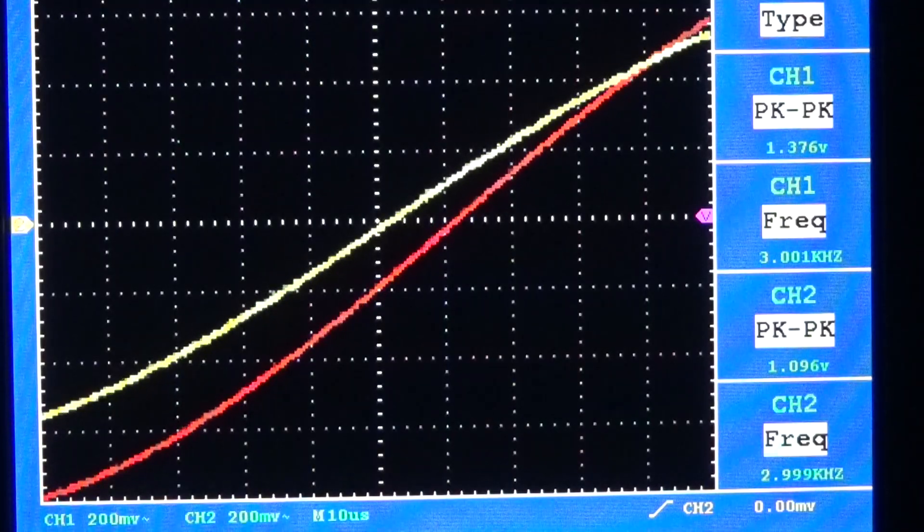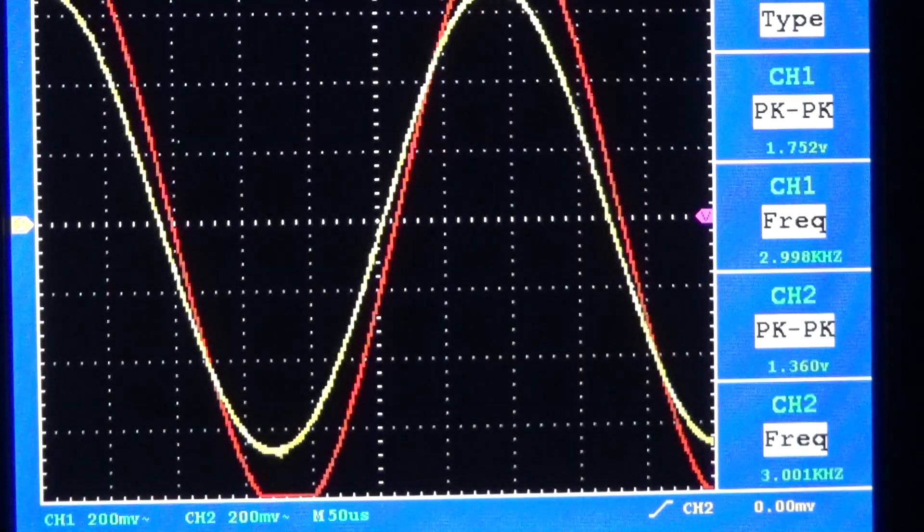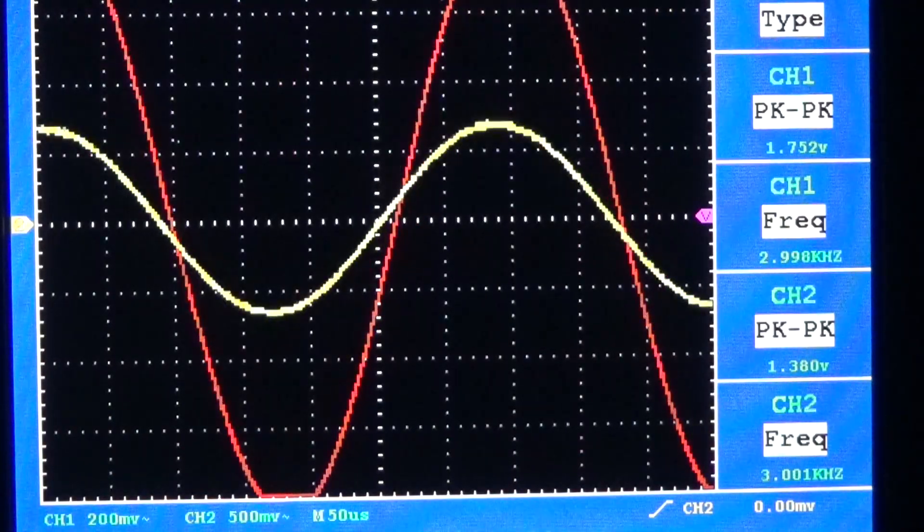This is the cure to crossover distortion. It's to be able to control the amount of bias voltage we're applying to the output stage.